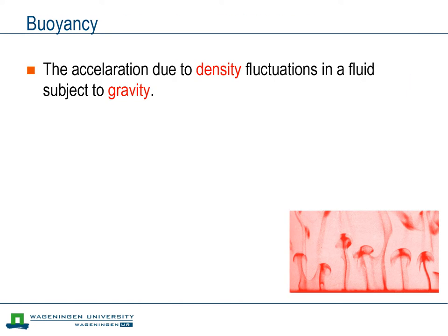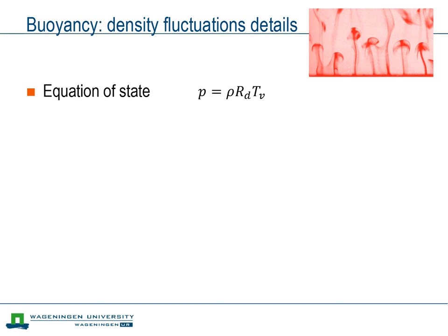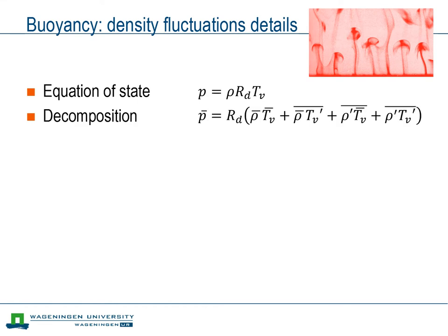We have seen the qualitative effect of buoyancy, but the question is if we can quantify it. We start from the equation of state. To simplify the analysis, we incorporate the effect of water vapor on the gas constant into the virtual temperature, and at the same time replace the real gas constant by the gas constant for dry air. Since we are considering a turbulent flow, we need to decompose density and virtual temperature using Reynolds decomposition.